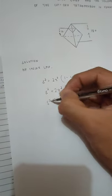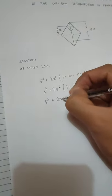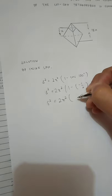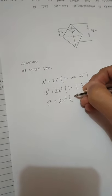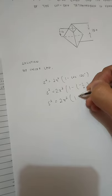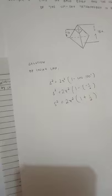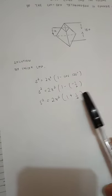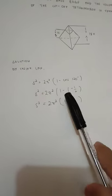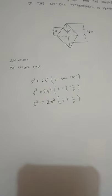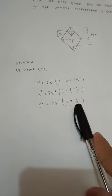S squared equals to 2Z squared times 1 equals to 1 plus 1 half. So, kaya naging positive to is because negative times negative is equals to positive.